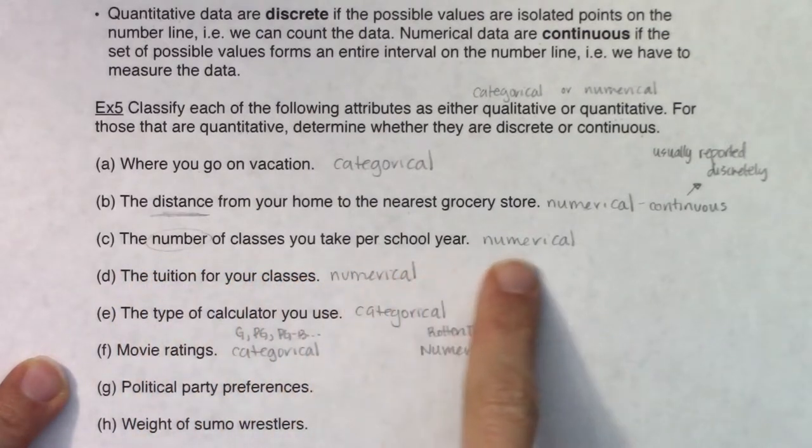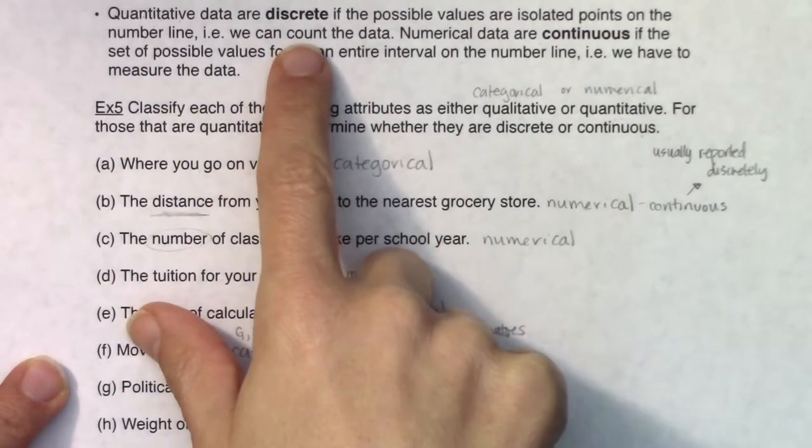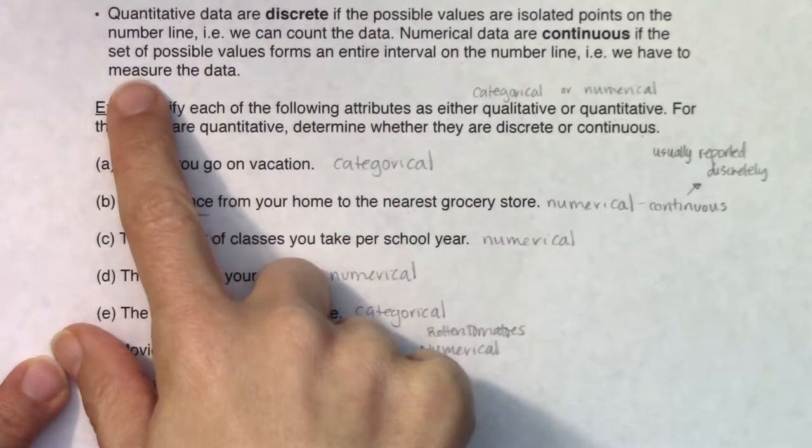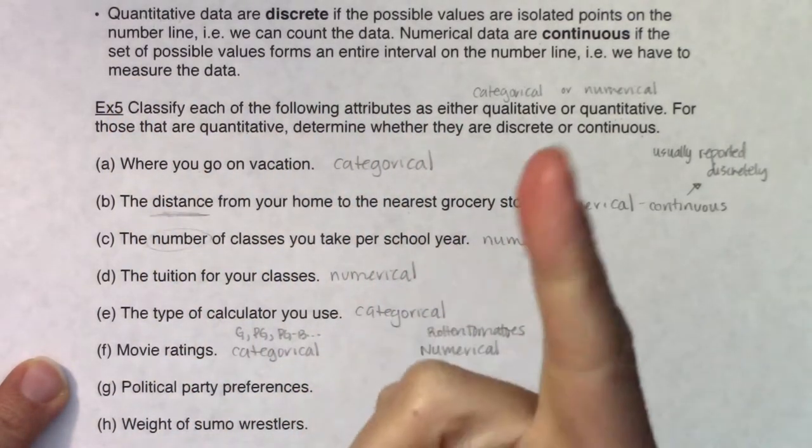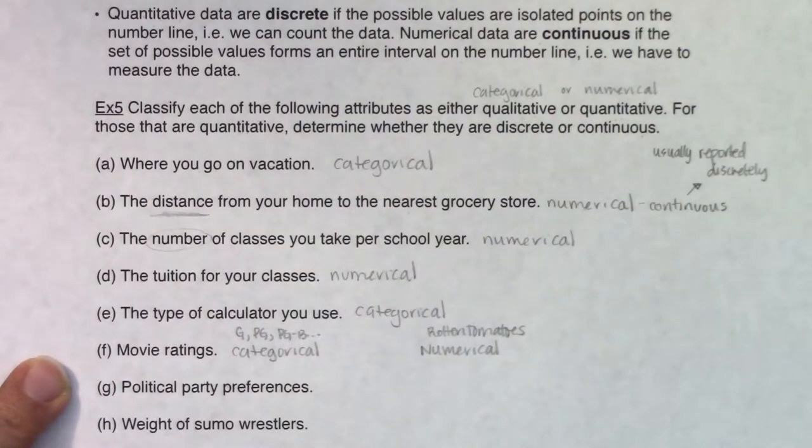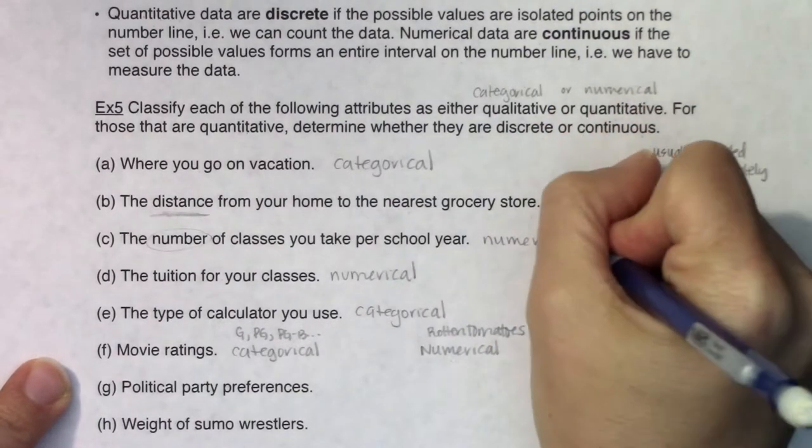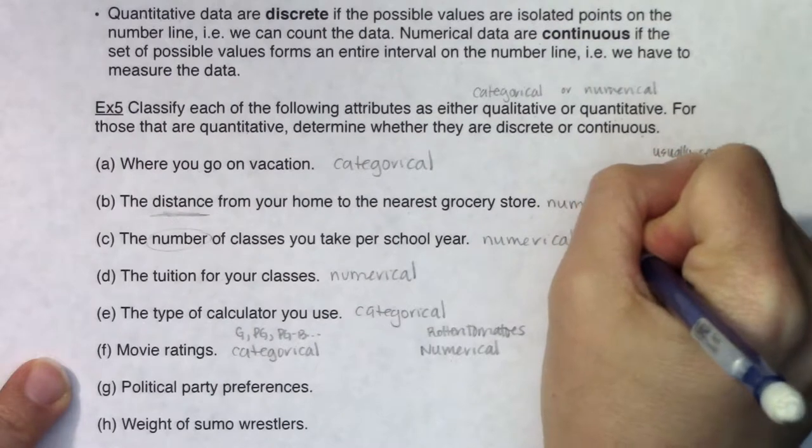The number of classes you take per school year. Do I count that variable or do I measure that variable? I'm definitely going to count it. I'm taking one class or two classes or three classes. So this is an example of numerical discrete.